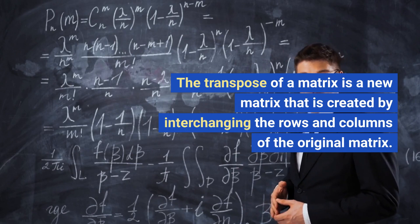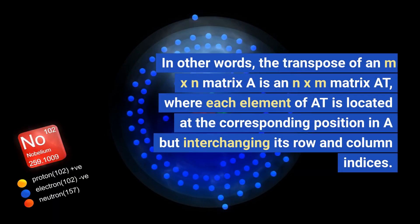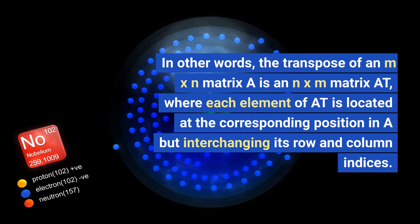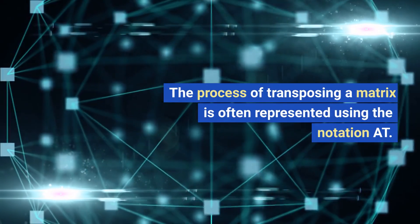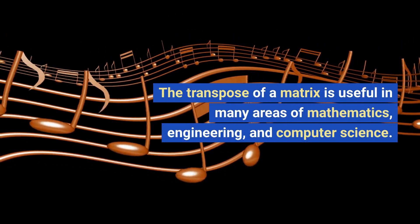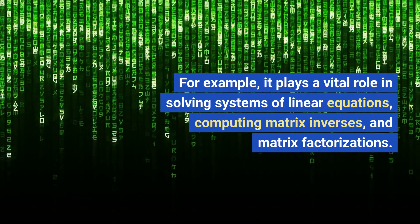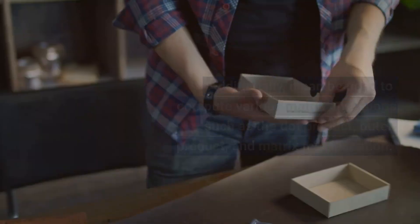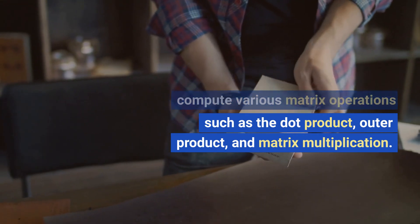The transpose of a matrix is a new matrix created by interchanging the rows and columns of the original matrix. The transpose of an M×N matrix A is an N×M matrix AT, where each element of AT is located at the corresponding position in A but with interchanged row and column indices. The transpose of a matrix is useful in many areas of mathematics, engineering, and computer science. It plays a vital role in solving systems of linear equations, computing matrix inverses, and matrix factorization. Additionally, it can be used to compute various matrix operations such as the dot product, outer product, and matrix multiplication.